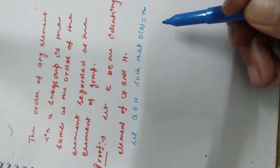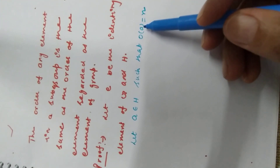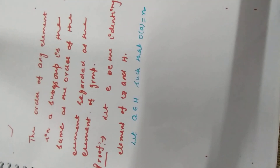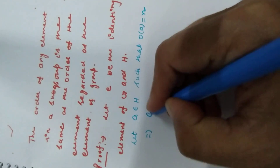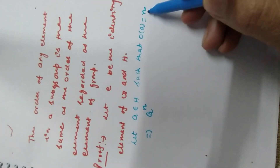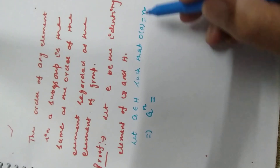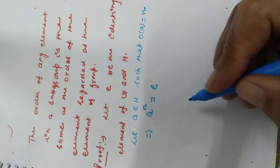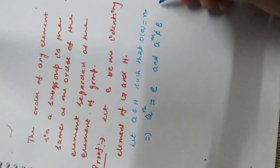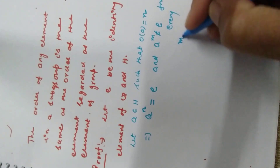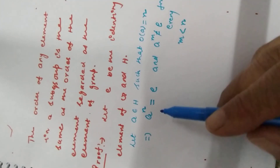Is theorem mein yeh prove karna hai ki order of this element a, jo H ko belong karta hai, uska order barabar hoga us a ka jo G ko belong karta hai. Yeh prove karna hai. We suppose a belongs to H such that order of a is equal to n. Agar order of a is equal to n hota hai, to a raised to power n equals the identity element e, and a raised to power m is not equal to e for every m less than n. Jin bhi m, n se chhote honge, unke liye identity element ke barabar nahi hota hai.